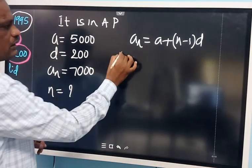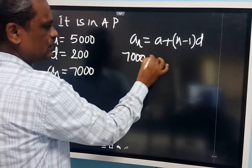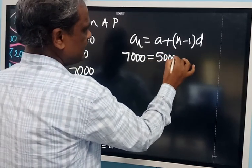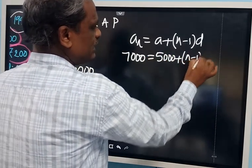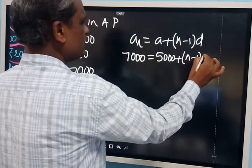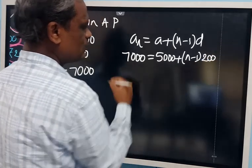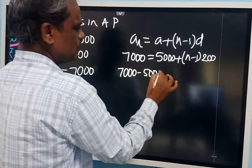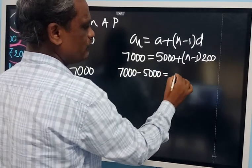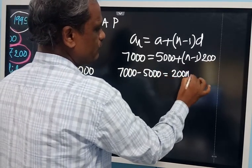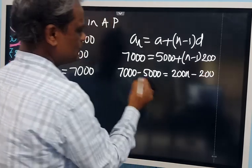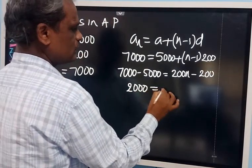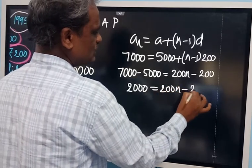Substituting here: AN is 7000, A (first term) is 5000, then (N minus 1) into D, which is 200. Transferring 5000 to the left side: 7000 minus 5000 = 2000 is equal to 200 multiplied by (N minus 1). So this is 2000, which equals 200N minus 200.